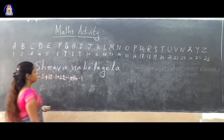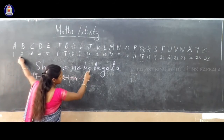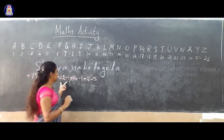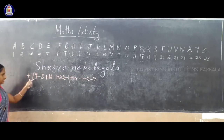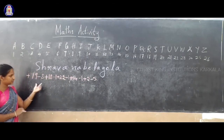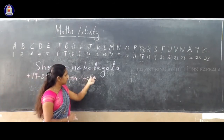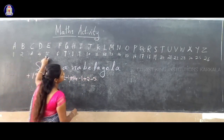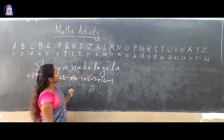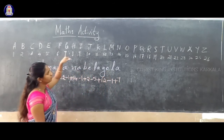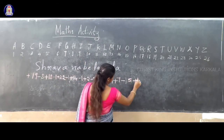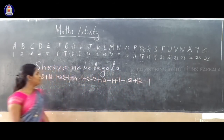A is minus 1. D is plus 2. E is 5, so minus 5. N is 12, so write plus 12. A is minus 1. G is 7, so plus 7. O is 15, so minus 15. L is 12, so plus 12. A is minus 1. Now you have to solve these integers.